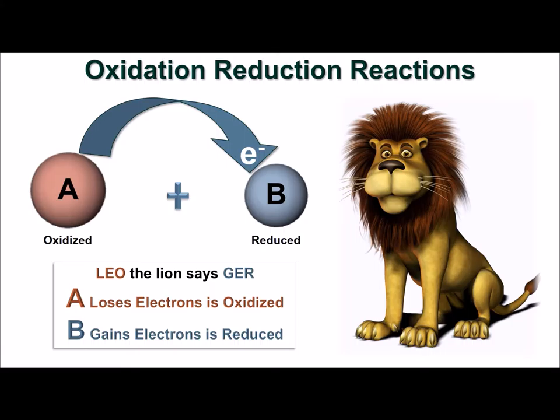In a redox reaction, one substance loses electrons and is oxidized, and one substance gains electrons and is reduced. A helpful mnemonic for remembering these definitions is Leo the lion says Ger.